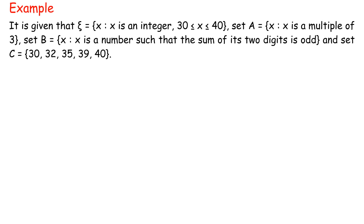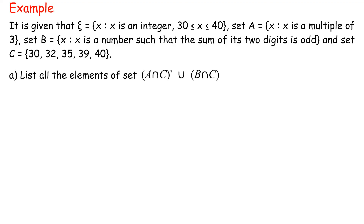Example. It is given that universal set equals {x : x is an integer, 30 ≤ x ≤ 40}. Set A equals {x : x is a multiple of 3}, set B equals {x : x is a number such that the sum of its two digits is odd}, and set C equals {30, 32, 35, 39, 40}. Part A: List all the elements of complement set of (A intersect C) union (B intersect C).